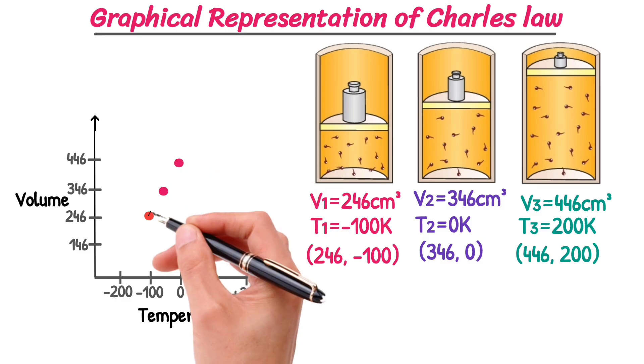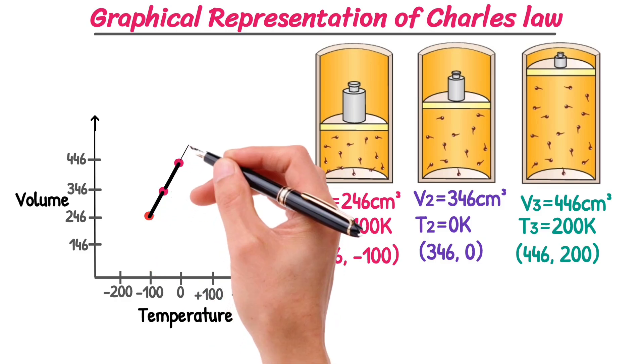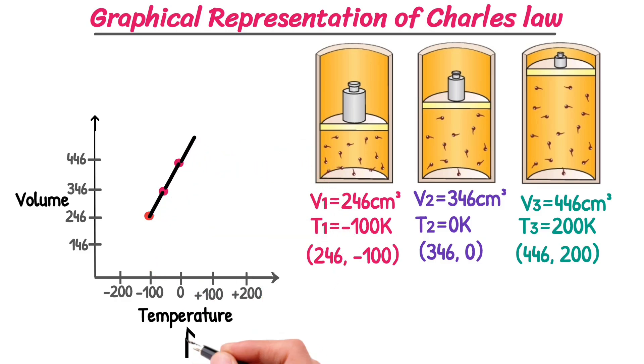When we connect all these points, we see a straight line. This is Charles's Law, showing that as temperature increases, volume increases.